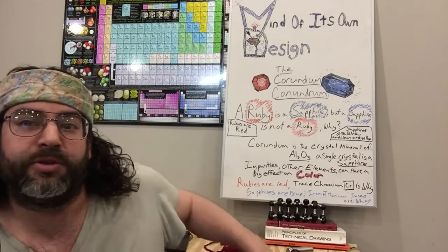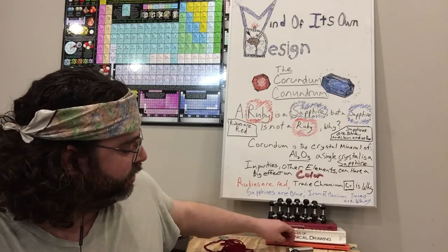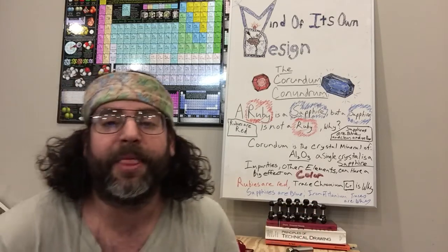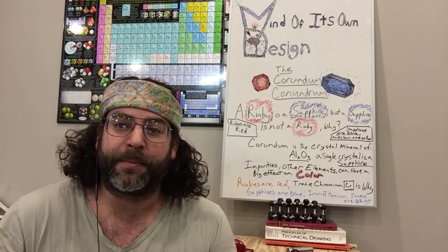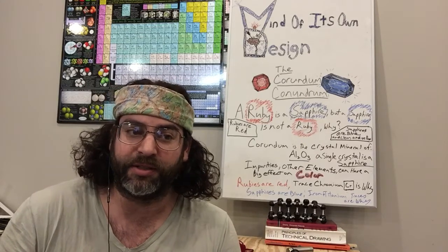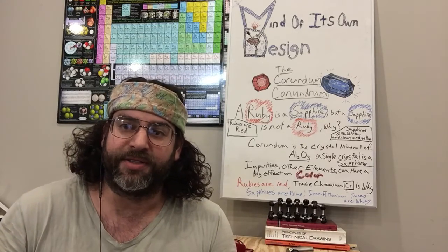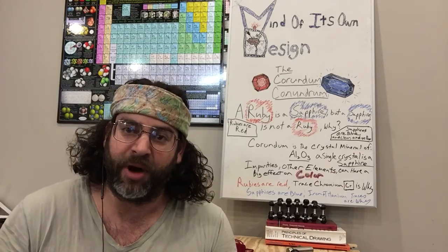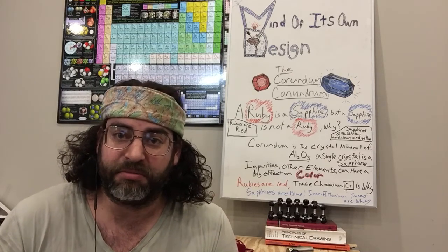So that's 2 aluminum, 3 oxygen, and in that ratio, if you have a material that has multiple small crystals, this is called a polycrystal, and aluminum oxide would be white in that case.